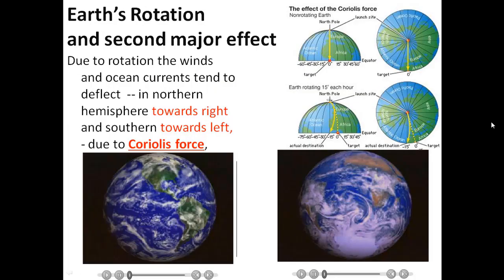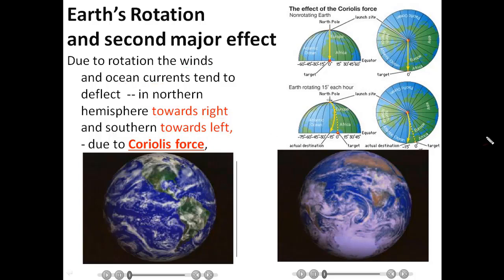Now we will learn about the second major effect of Earth's rotation. Due to rotation, the winds and ocean currents tend to deflect. In the Northern Hemisphere, winds and ocean currents tend to bend toward the right direction, while in the Southern Hemisphere they tend to bend toward the left. This force is called the Coriolis force.